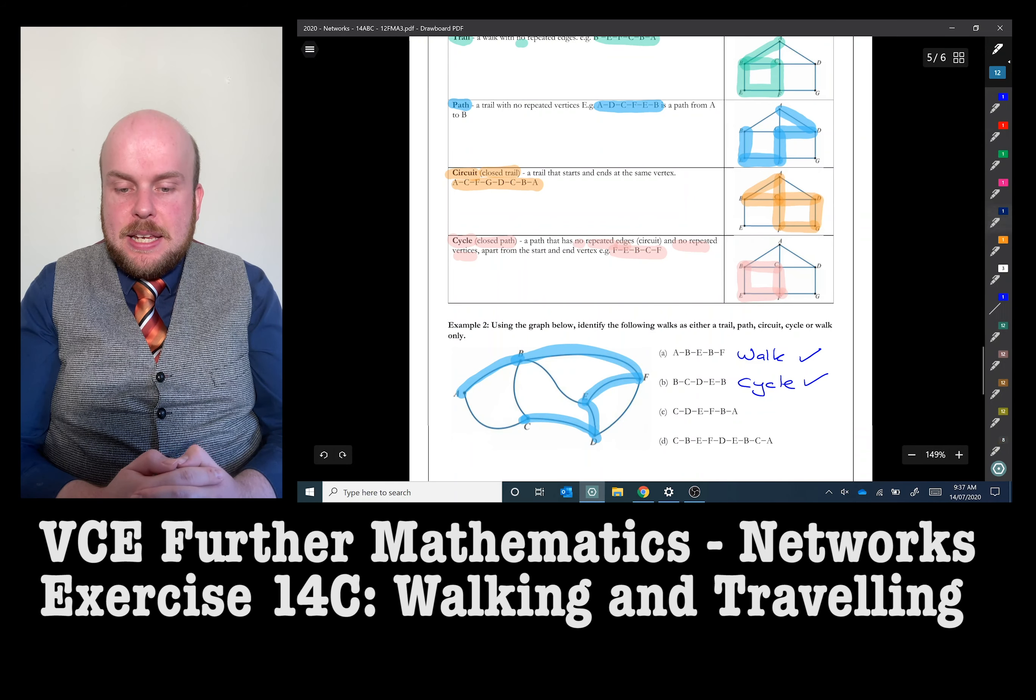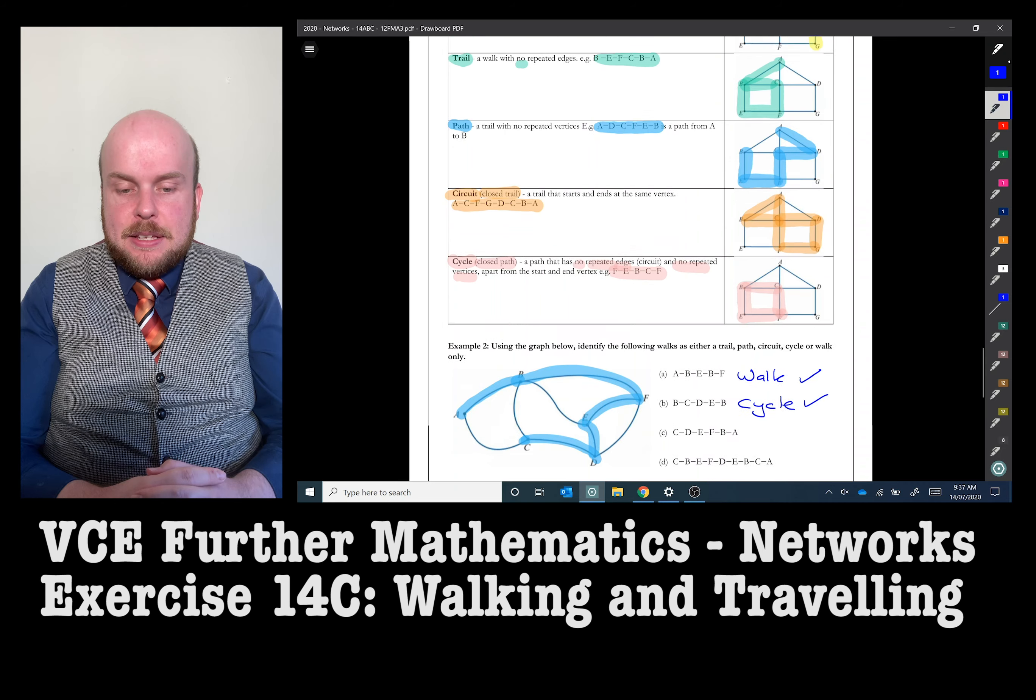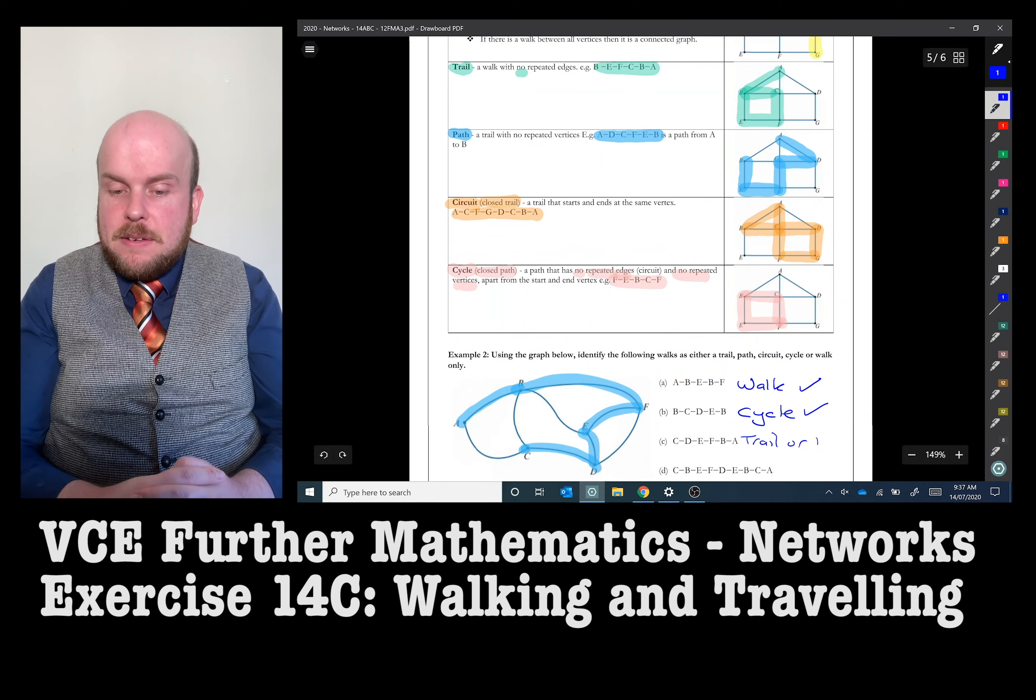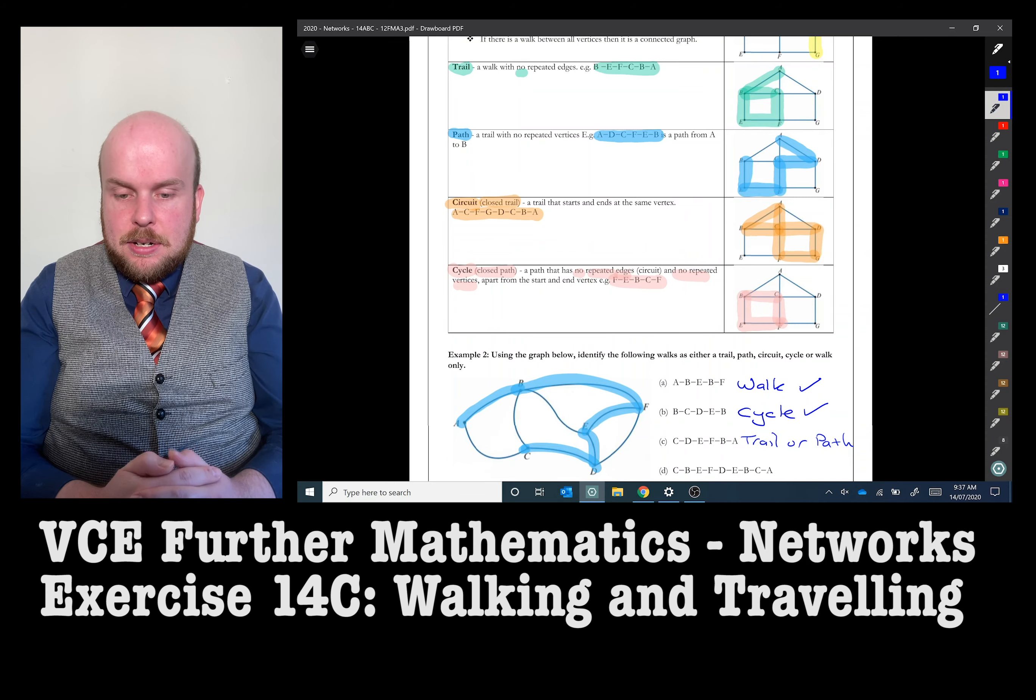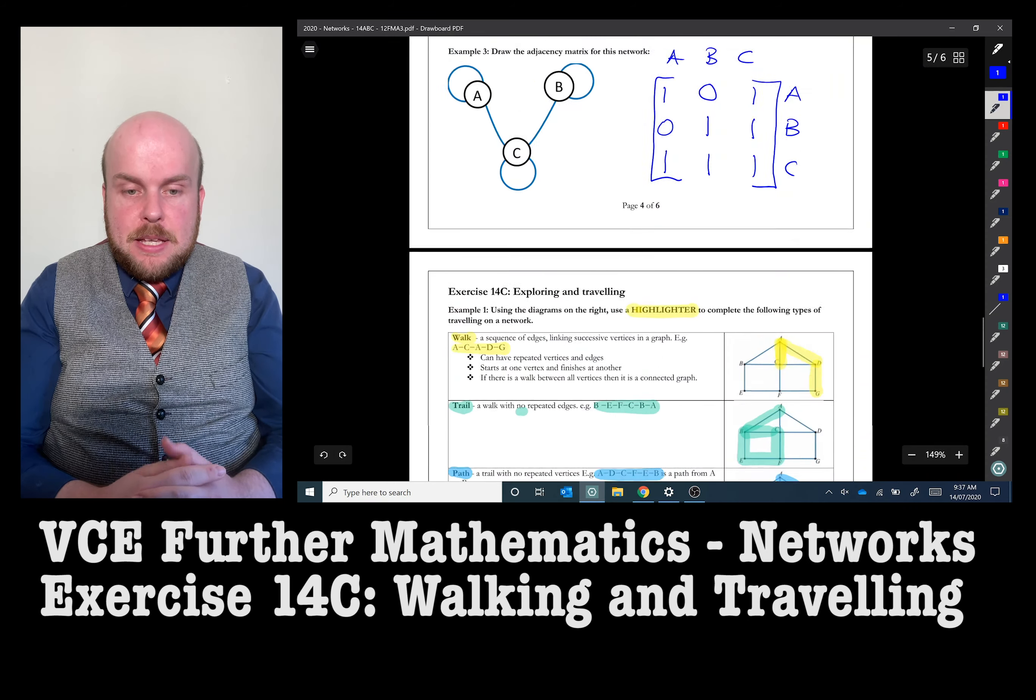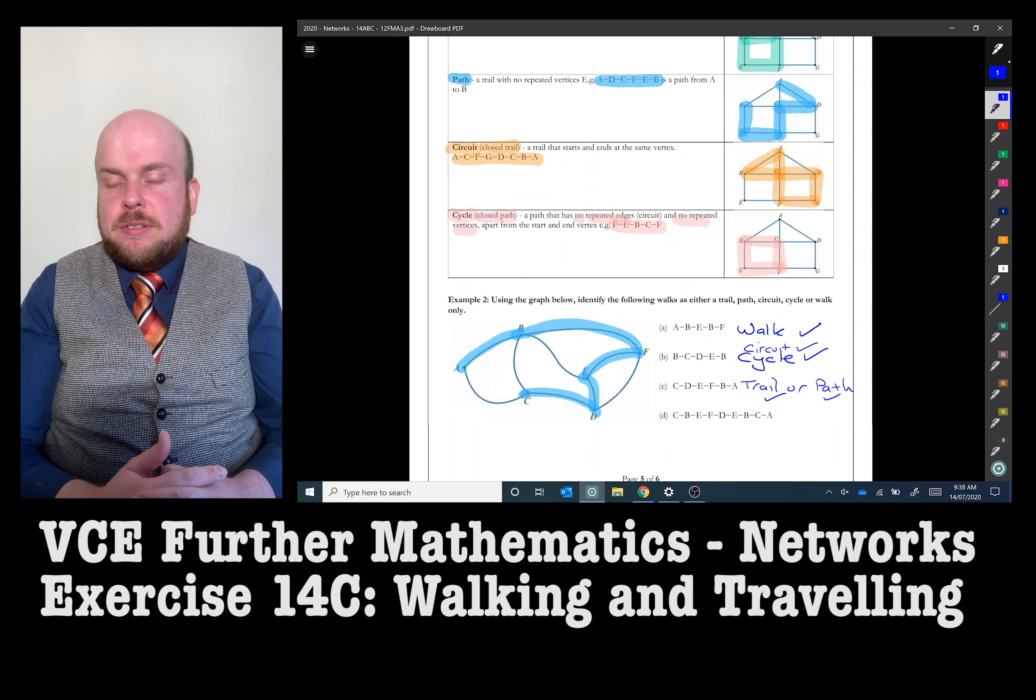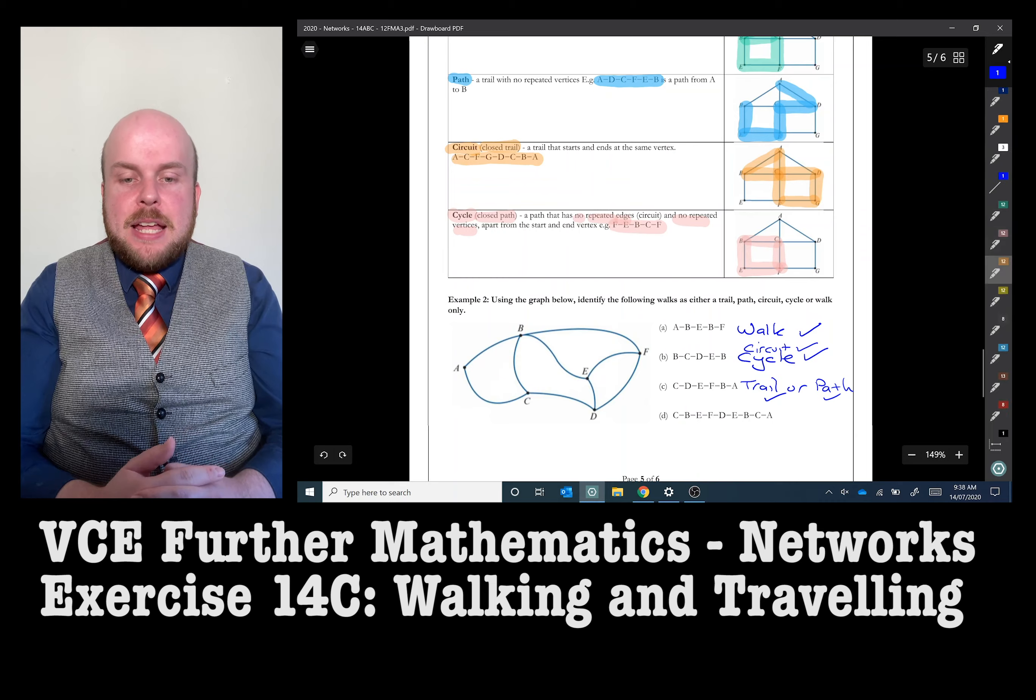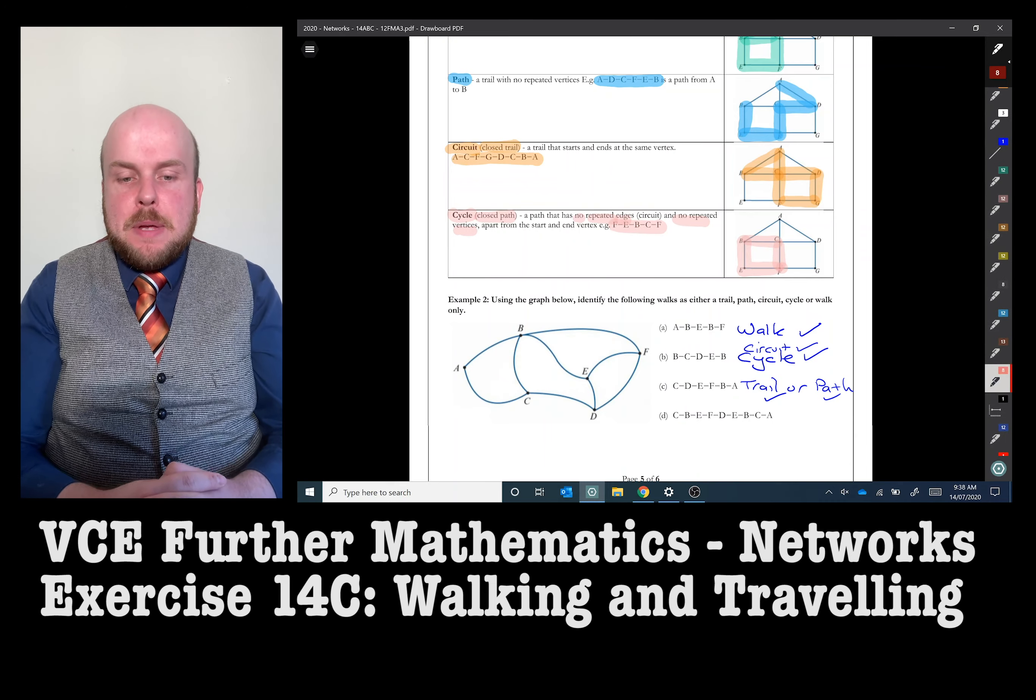C-C-D-E-F-B and A, so that has no repeated edges. There's no repeated vertices. So which one would I refer that to be? So that would be a path. You could theoretically describe it as a trail. I have said it could be a trail or a path, but the answer I'd probably prefer would be a path.